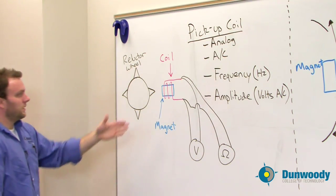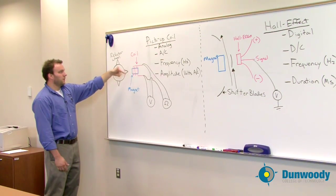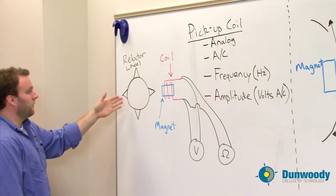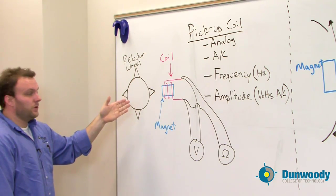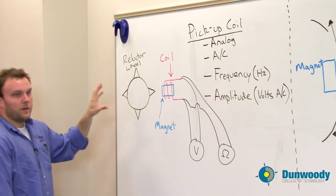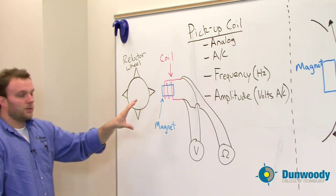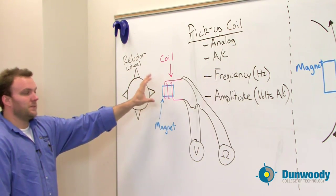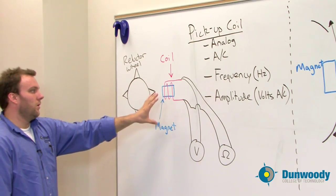A pickup coil is basically a magnet wrapped with a coil of wires acting as a conductor and some sort of a reluctor wheel. If you remember from mutual induction, this is similar to that. However, we don't have a magnetic field collapsing onto another conductor. We have a magnetic field from a permanent magnet collapsing onto a coil of wires.